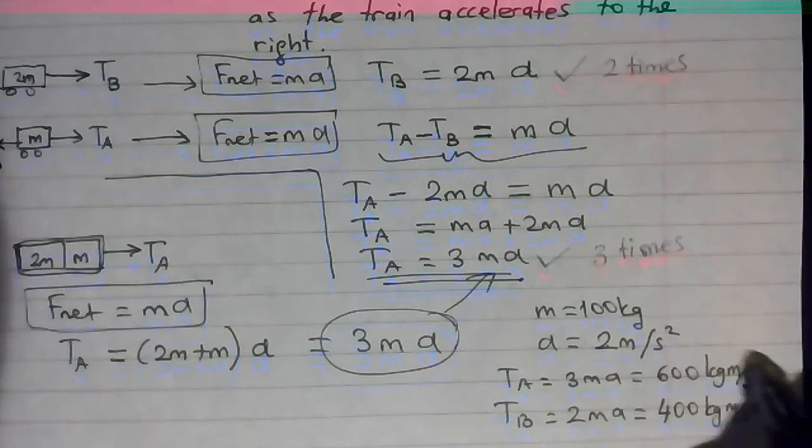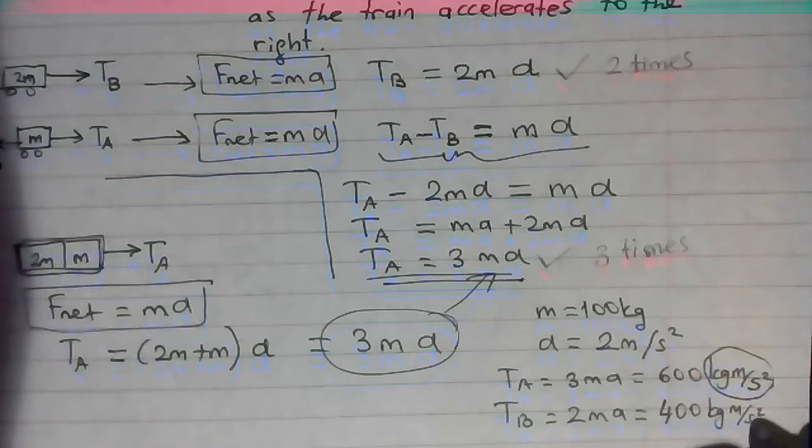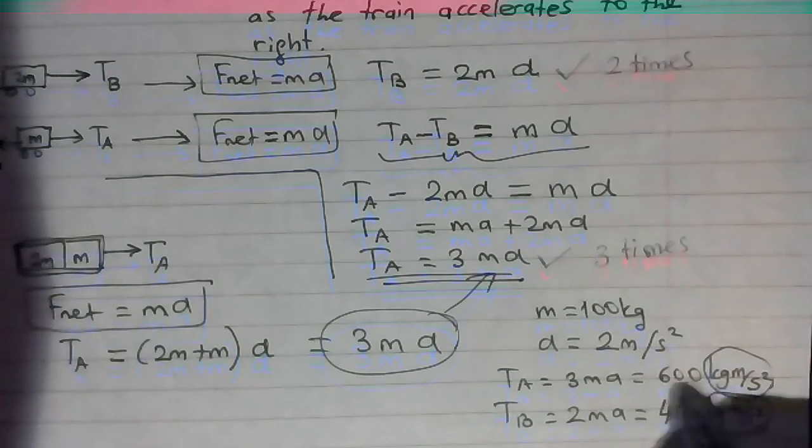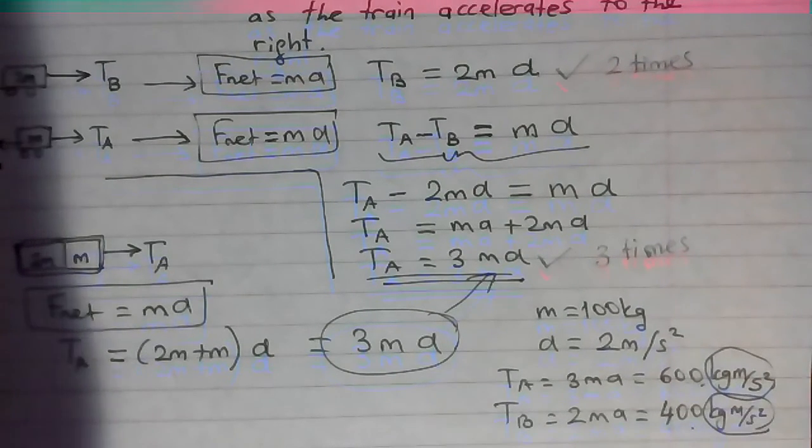which is 600 kilogram meter per second squared. Kilogram meter per second squared is Newton. We could directly write 600 Newton and 400 Newton.